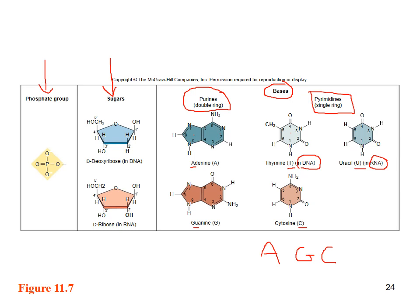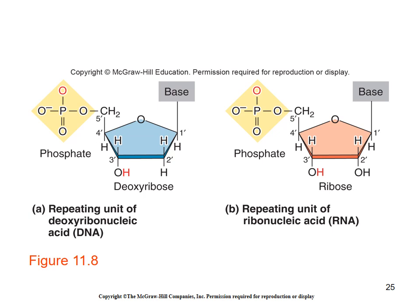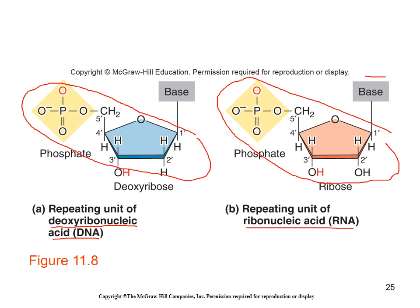The deoxyribose versus ribose sugar makes up our deoxyribonucleic acid (DNA) or ribonucleic acid (RNA), forming the backbone section. The base itself is where your A, G, C, T, and U interact with each other. One thing to note is the numeration of the carbons on the sugar — specifically the 3 prime and the 5 prime — these locational terms are important and come from the orientation of the carbons on the sugar.